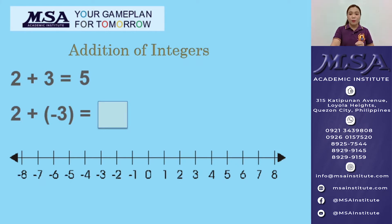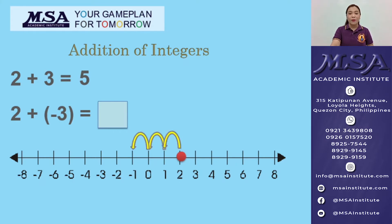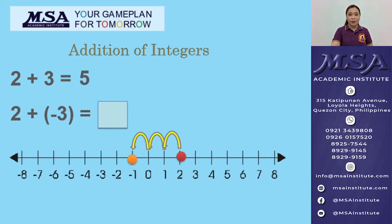So plot 2 on the number line. And then move 3 units to the left — 1, 2, 3. We end up at negative 1. So the sum is equal to negative 1.